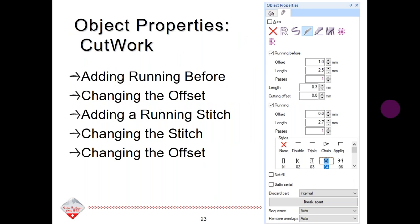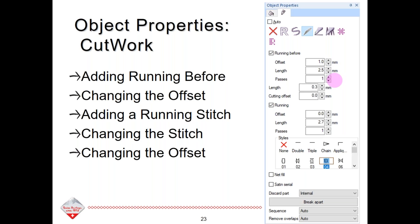Now we're going to look at object properties in the Cutwork to talk about some properties you can add to your Cutwork file. Generally, we want to add a running before stitch set at an offset of one — just a little bit outside the border. This helps hold the applique piece in place so that you get a better cut. You can change the number of passes and the length of the stitch, but generally those are used at default settings.